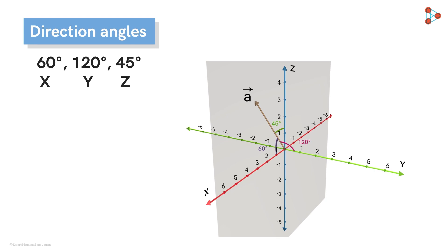And generally, we use Greek letters like alpha, beta, and gamma to represent these angles, where alpha is the angle a vector makes with positive x-axis. Beta and gamma are the angles that a vector makes with positive y and z-axis respectively.